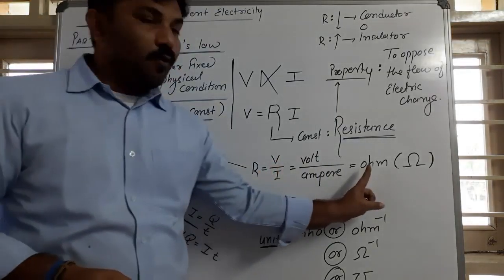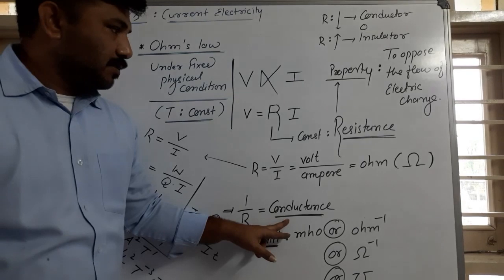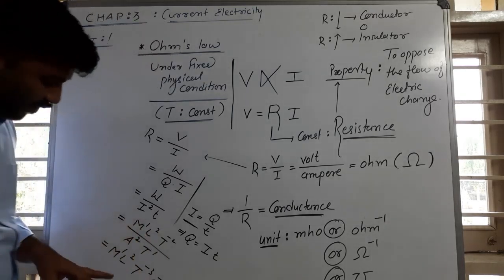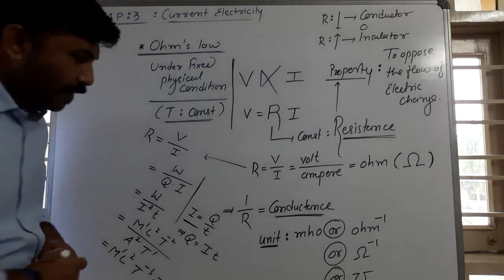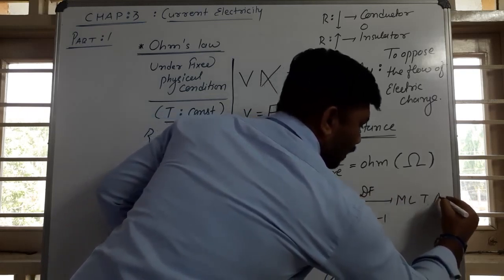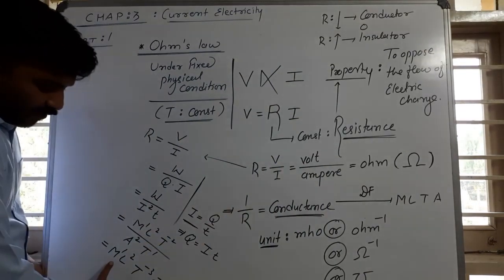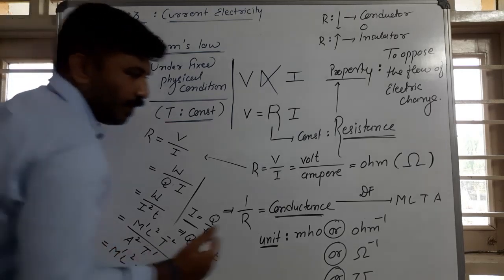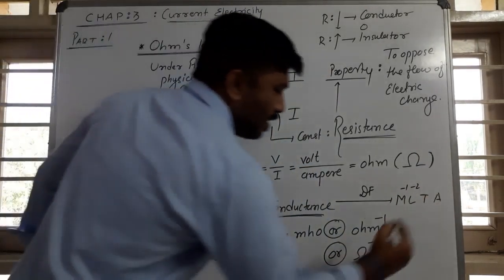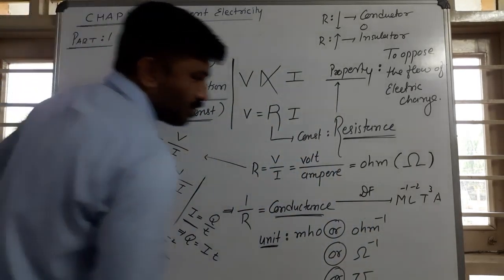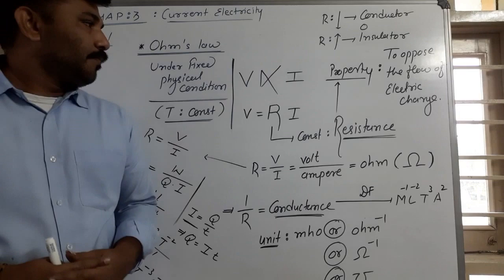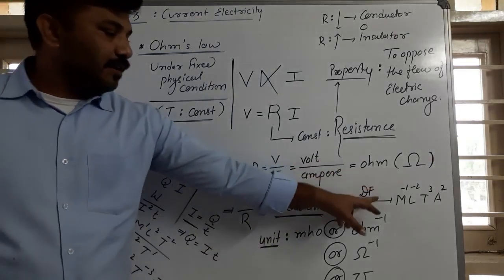The inverse of resistance is conductance. The dimension formula of conductance is the inverse of that of resistance: M minus 1, L minus 2, T plus 3, A plus 2. So, this covers Ohm's law, resistance, conductance, their units, and dimension formulas. Thank you.